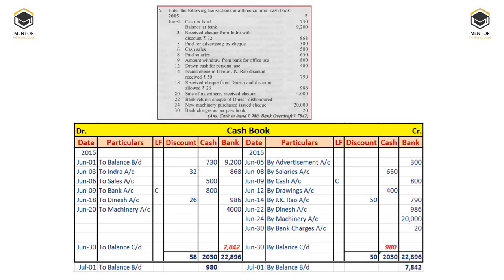For the discount columns, we made the summation of both debit and credit sides. The debit total goes to the discount allowed account and the credit total goes to the discount received account. This is the way to prepare the three column cash book.